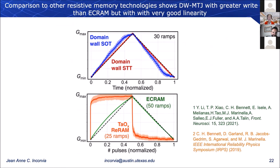We then compared how the Domain-Wall MTJ behaves as a synapse relative to other leading synaptic devices — using data from our colleagues at Sandia. We compared to electrochemical random access memory (EC-RAM) and a titanium oxide ReRAM device. The domain wall MTJ has slightly greater stochasticity and noise than EC-RAM, but with improved linearity, especially for the STT case. Compared to titanium oxide ReRAM, we see a lot of benefits in improved linearity.